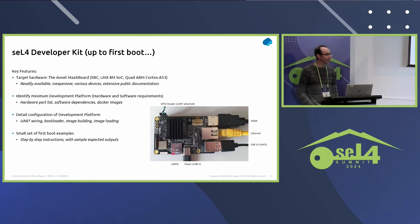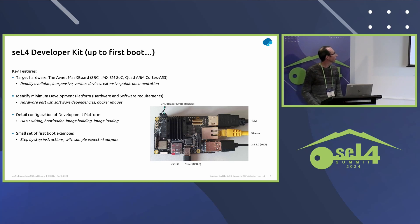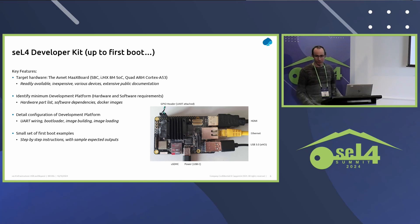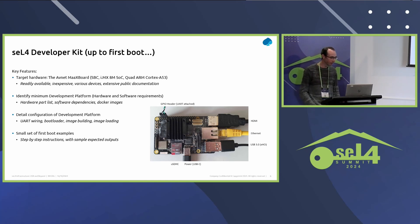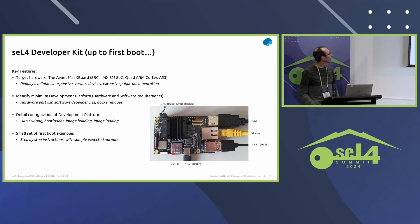Key features of the developer kit in getting to first boot: we're very specific. We've picked a very specific target hardware — the Avnet MaaXBoard. This SBC has an ARM-based architecture. It's readily available, quite cheap, and it's got a host of devices — and perhaps most importantly, a good set of public documentation. We identify the minimal development platform you would need to get started, detailing that through a hardware shopping list — the minimum set of parts and minimum amount of software needed. We back that up through Docker images, so the main software dependency is Docker, and after that you just get our Docker image to get all the dependencies.